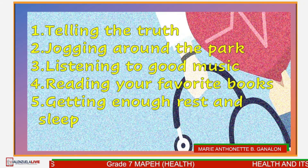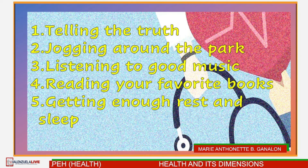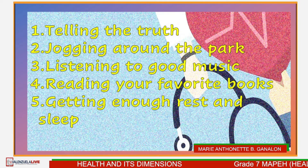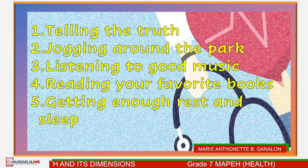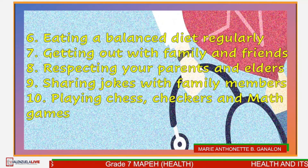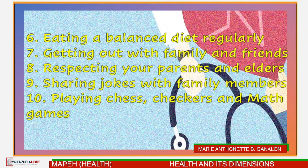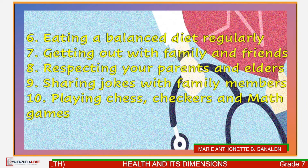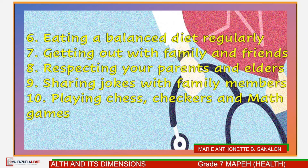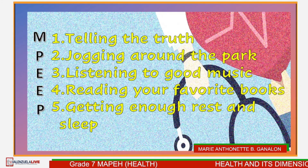Number one, telling the truth. Number two, jogging around the park. Number three, listening to good music. Number four, reading your favorite books. Number five, getting enough sleep and rest. Number six, eating a balanced diet regularly. Number seven, getting out with family and friends. Number eight, respecting your parents and elders. Number nine, sharing jokes with family members. Number ten, playing chess, checkers, and math games. Let's find out who got all the answers correct.